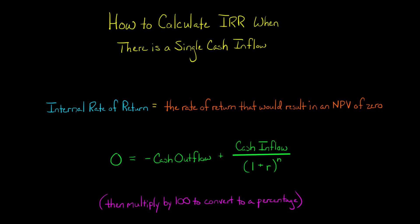When a project has a series of cash inflows that are occurring over time, you're going to have to use trial and error or something like Excel to calculate the internal rate of return. But when there's just a single cash inflow where you invest some cash today and you receive some cash at some point in the future, you're going to be able to use this formula to calculate the IRR directly.